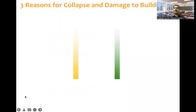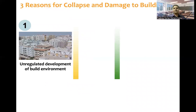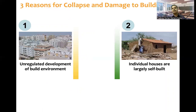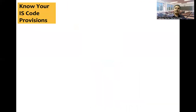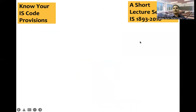There are three reasons for collapse and damage to buildings. First, in urban areas, a lot of unregulated development is happening in the building environment. Second, in rural areas, buildings are largely self-built. Third, there is lack of awareness of earthquake standards for design and construction. It's not that we don't have good standards — we have good standards, but many times it is adherence to these standards where there is lack of awareness. This effort — Know Your IS Code Provisions, a short lecture series on IS 1893 — is an attempt to fill that gap.